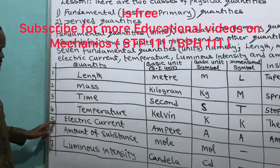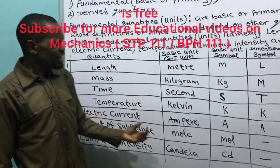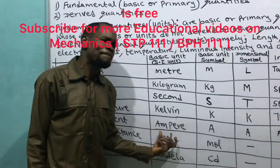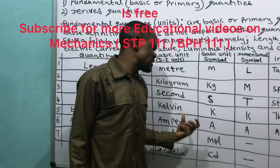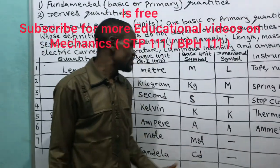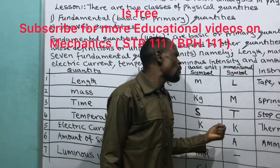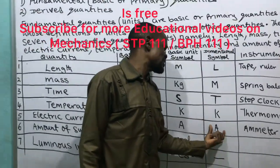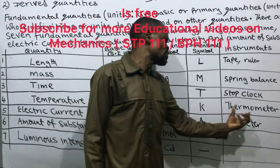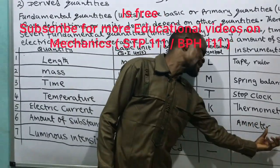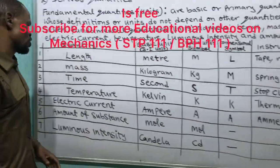Number five: electric current. The basic unit of electric current is the ampere. The basic symbol is 'A.' The dimensional symbol of electric current is capital A. We use the ammeter to measure electric current.